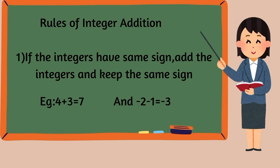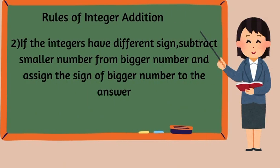If both integers have different signs, subtract the smaller number from the bigger number and assign the sign of the bigger number to the answer. Example: negative 2 plus 6 means 6 minus 2 equals 4, and the sign of 6 is positive, so the final answer is positive 4. For 3 minus 6: subtract 6 minus 3 equals 3, and 6 is the bigger number with a negative sign, so the final answer is negative 3.